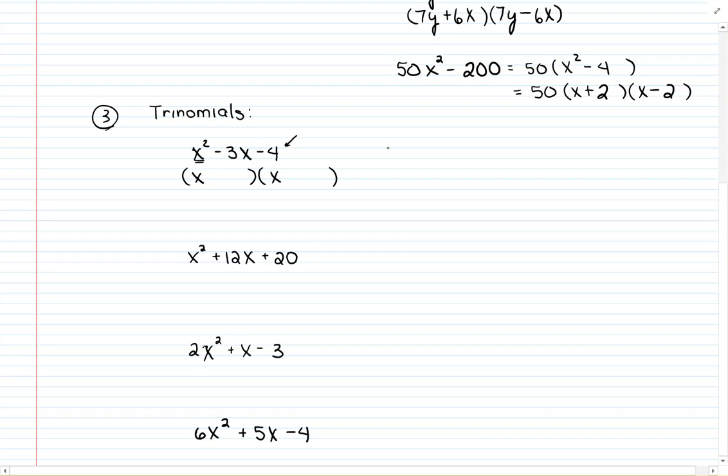I look at the last number and I think what two numbers multiply to give me negative 4, but then must add to give me the middle number of negative 3. Now, I'm just looking at the number parts. I'm not worried about the x part here, just the numbers. What multiplies to negative 4, but adds to negative 3? My numbers are going to be negative 4 times positive 1 and negative 4 plus 1 gives me the negative 3. So, I put in my negative 4 and my plus 1 and I factored it.